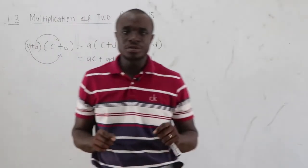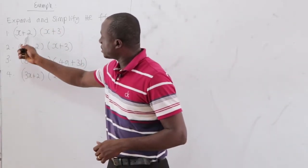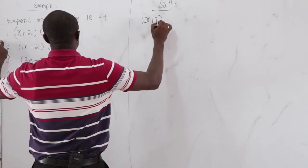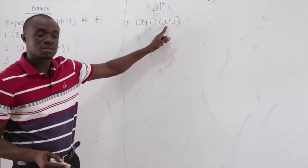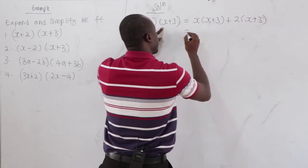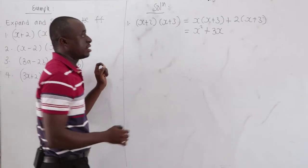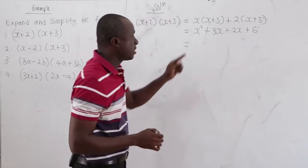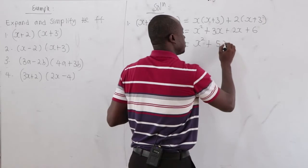Expand and simplify the following. First: x plus 2 times x plus 3. We take x and multiply by x plus 3: x times x equals x squared, x times 3 equals 3x. Then 2 times x equals 2x, 2 times 3 equals 6. Grouping: x squared, 3x plus 2x equals 5x, and 6. Answer: x squared plus 5x plus 6.